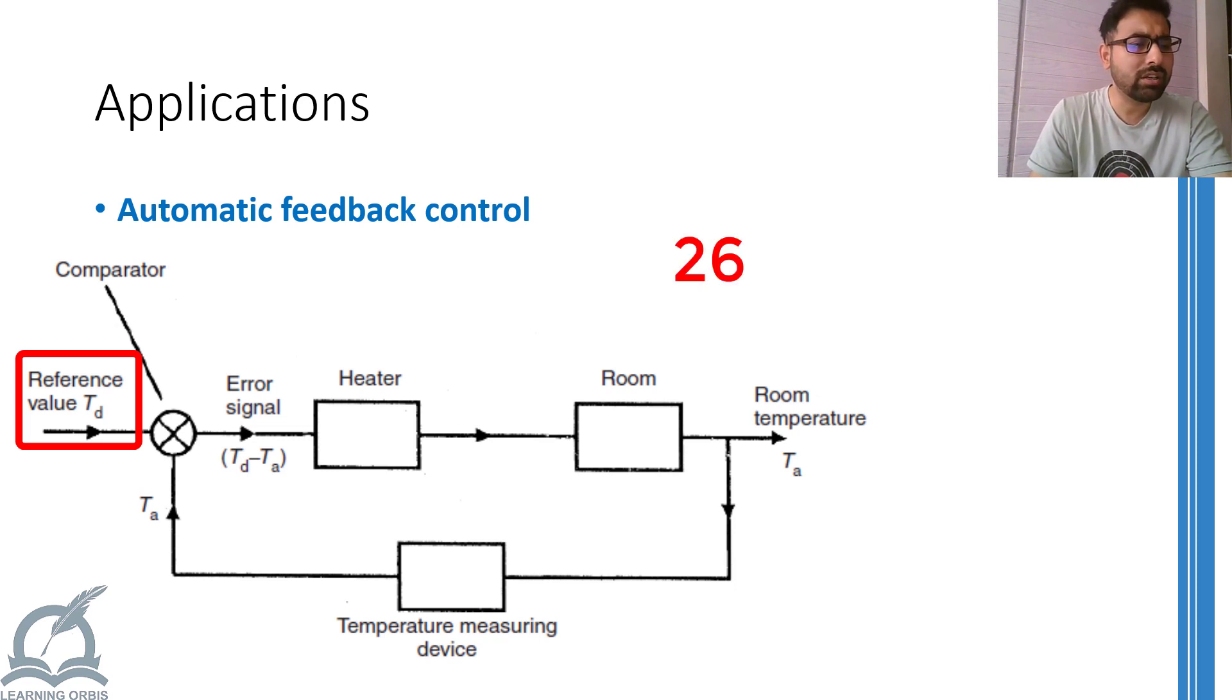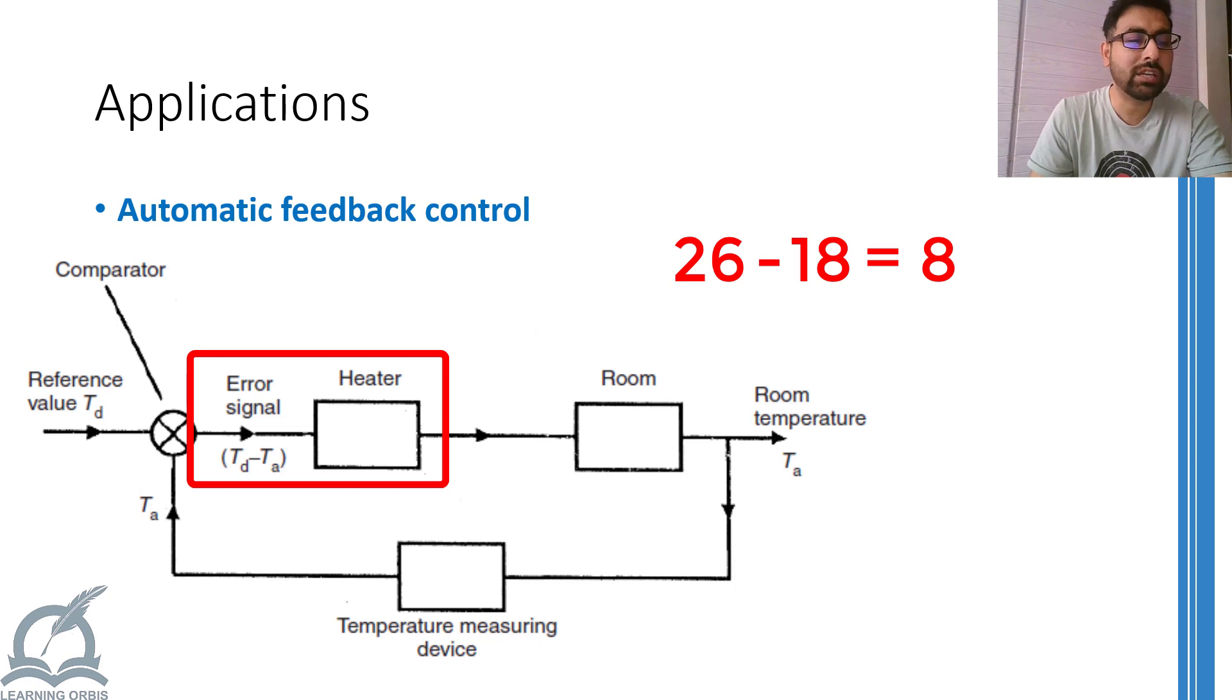As soon as you start the heater, it will measure the temperature of the room and calculate the difference between the two temperatures. The larger the difference between the two temperature is, the more heater must work. Let's suppose the room is at 18 degrees Celsius. Therefore, the error in the temperature would be 26 minus 18 equals to 8 degrees Celsius.